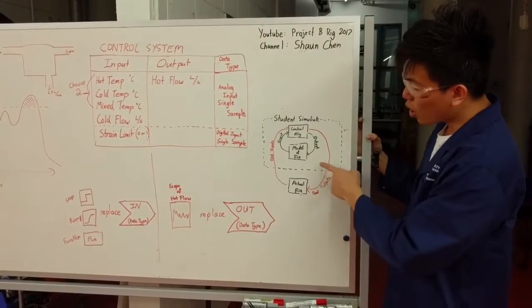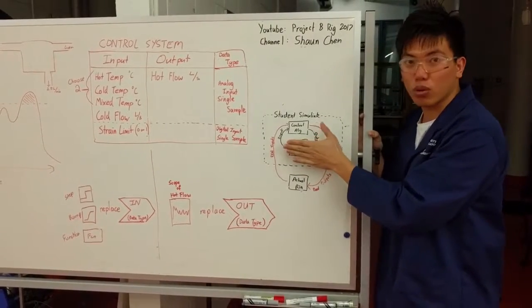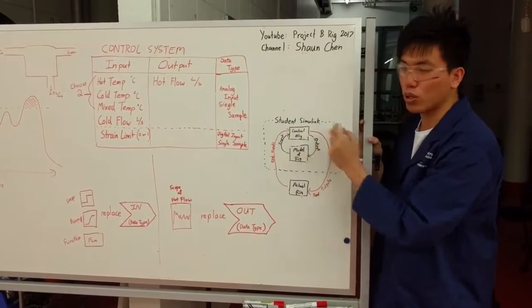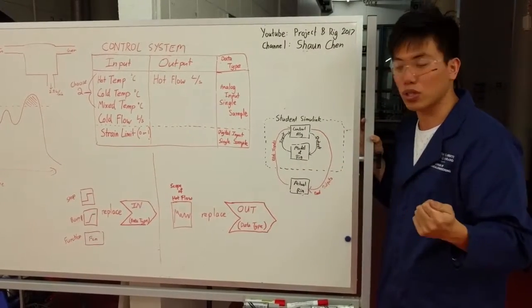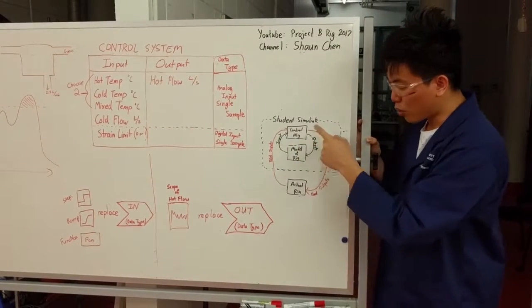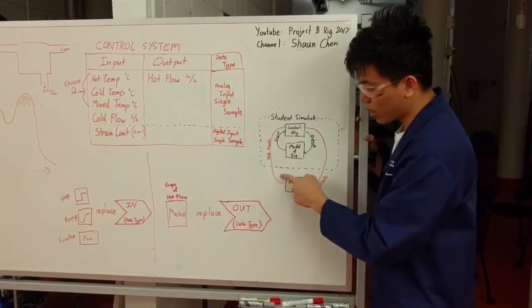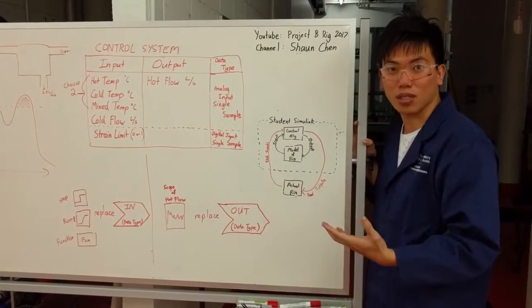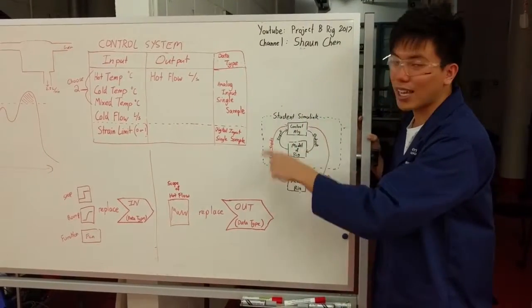When it comes to actual testing and demo day, we'll get you to get rid of the model of the rig that you produce and we just want your control algorithm, which we'll get you to upload to Blackboard and also bring on a USB just in case. At this point we will detach your inputs and outputs and we want you to give us some real outputs to our system, and you'll also get some real data from say temperature sensors and flow rates to your control algorithm and see how that works.